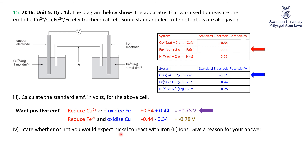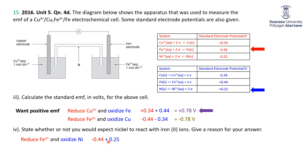The second part: would we expect nickel to react with Fe2+ ions? We're reducing Fe2+ to iron (minus 0.44) and oxidizing nickel to Ni2+ (plus 0.25). Putting them together: minus 0.44 plus 0.25 equals minus 0.19 volts — negative, so non-spontaneous. Therefore, we would not expect nickel to react with iron 2+ ions.